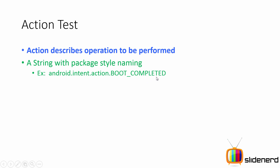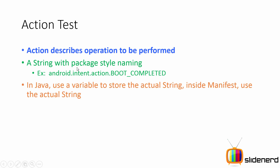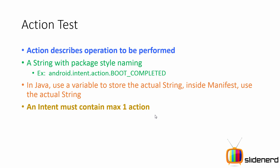For example, Android.intent.action.BOOT_COMPLETED is a predefined action which basically indicates that your Android phone has finished booting up. In Java, when you refer to actions you simply use a variable that contains the actual string, but inside your manifest file you're supposed to use the entire string value as-is without modifications. An intent must contain a maximum of one action, because that's the whole purpose of implicit intents — when you want to call someone without knowing their name, action is the most important criteria to know whether they are capable of performing your task.